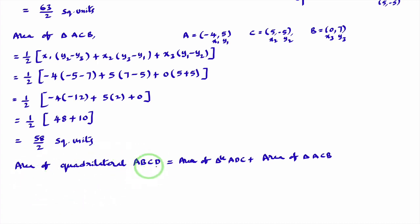So, final conclusion. Area of triangle ABCD we need to calculate. Area of triangle ABCD is nothing but, Area of triangle ADC plus Area of triangle ACB. Area of triangle ADC, what we got? Area of triangle ADC, we got it as 63 divided by 2. Plus, Area of triangle ACB, we got it as 58 divided by 2.